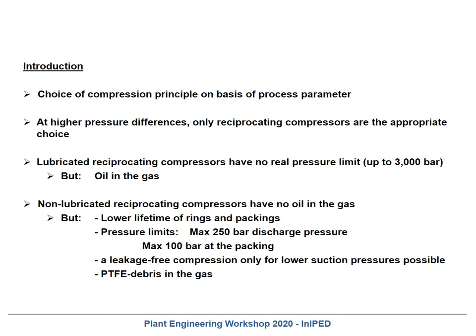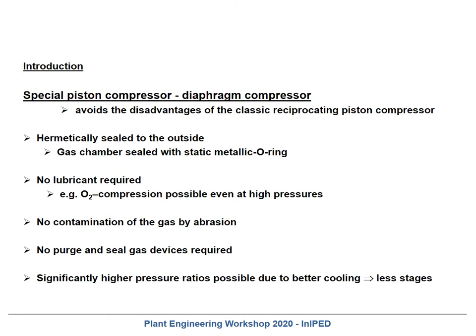The maximum possible discharge pressure is 250 bar and the maximum allowable pressure at the packing is 100 bar. When you exceed these values, the lifetime of the wear parts will go down. A leakage-free compression is only possible for lower suction pressures. In this case the frame is pressurized and sealed by mechanical seals at the crankshaft — but this is only possible for lower pressures, up to around 30 bar. Another disadvantage is that piston rings, rider bands, and packing internals are typically made of PTFE, and since they wear, you have a small amount of PTFE debris in the gas.